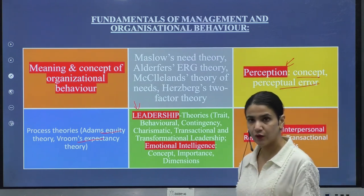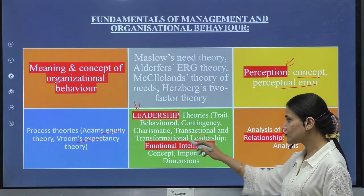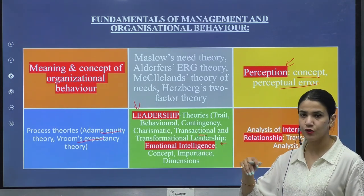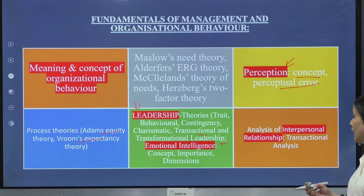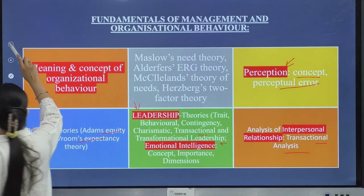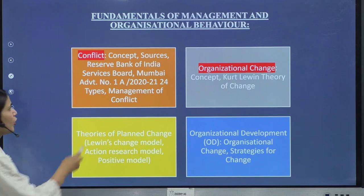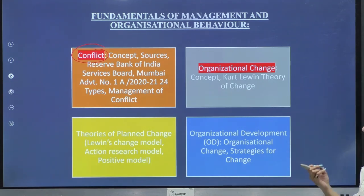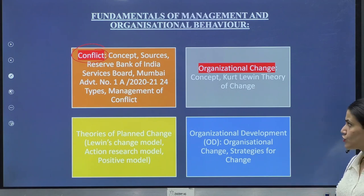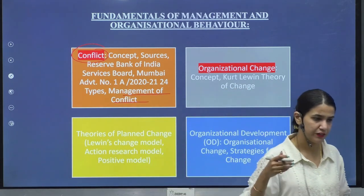Then you have transactional and transformational leadership. Then you have emotional intelligence, EI, as a topic — it is a very creative topic for you to answer, and you can expect questions from this. Then you have analysis of interpersonal relationships in an organization and transactional analysis. Under the topic of fundamentals of management and OB, you are also going to be studying about the concept of conflict — conflict itself is a very detailed topic, so you need to understand the concept, the sources, and everything in association with conflict, keeping a management perspective in mind — the types of conflict, the management of conflict, and everything.